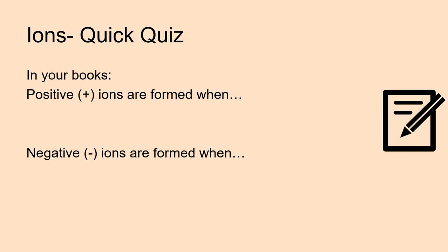A quick quiz. This should only take you 30 seconds. In your books, positive ions are formed when... Negative ions are formed when... Complete those two sentences for me. Hopefully, you've paused the video and completed that quick quiz task. So, positive ions are formed when an atom loses electrons. Negative ions are formed when an atom gains electrons.